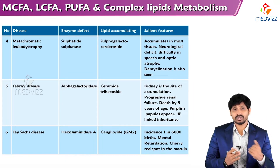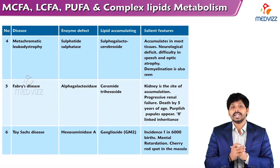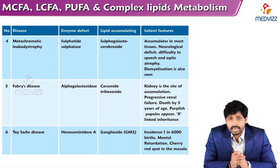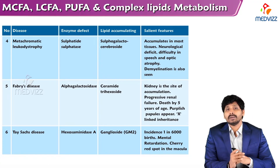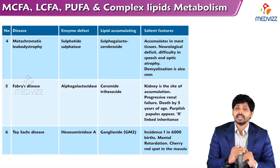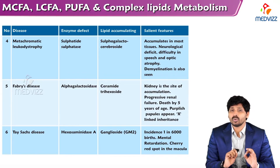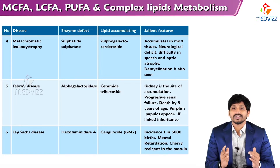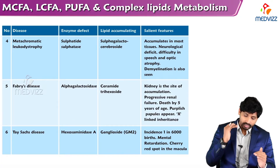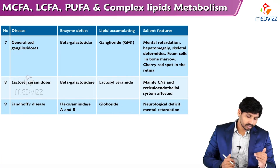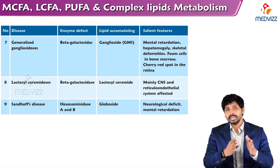The sixth is Tay-Sachs disease, caused by deficiency of hexosaminidase A. The accumulated product is ganglioside GM2. The incidence is 1 in 6000 births. Mental retardation is a prominent feature, along with cherry red spot in the macula.